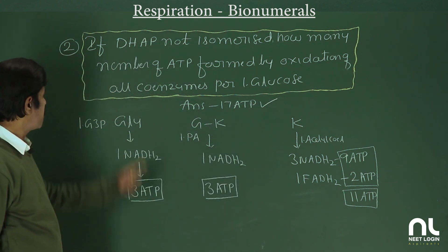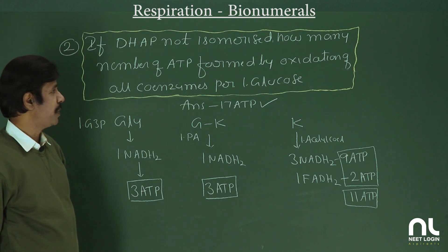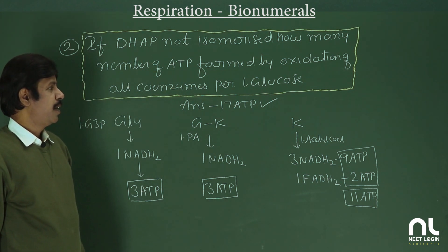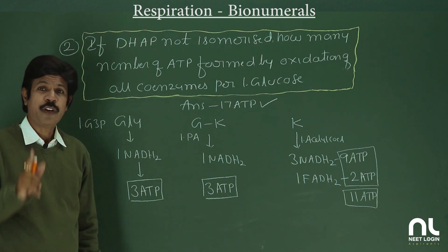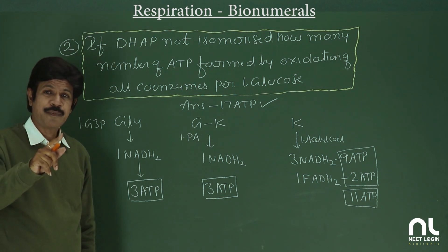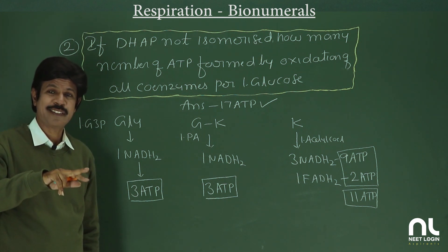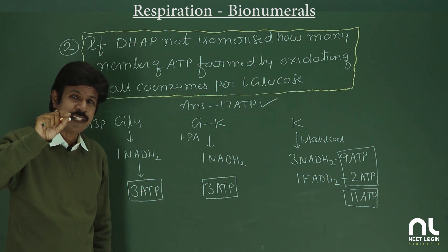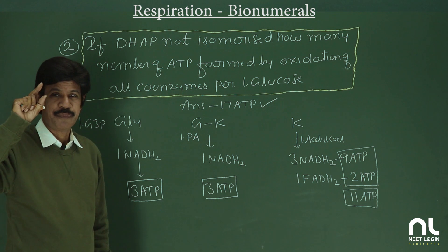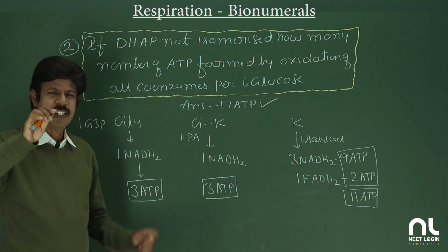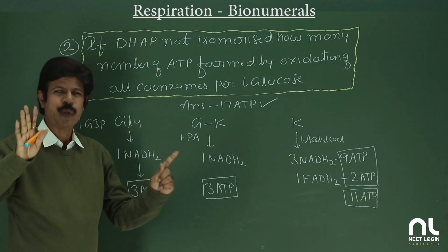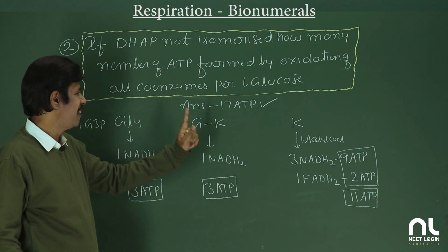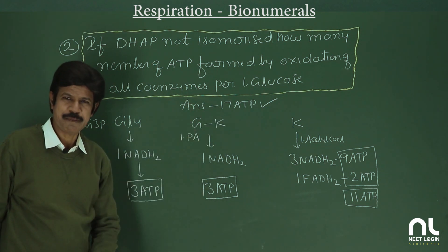If the question asks for total ATP when DHAP is not isomerized — including substrate level phosphorylation — you add 2 ATP from glycolysis and 1 ATP from Krebs cycle, giving 17 + 3 = 20 ATP. Oxidation of 1 G3P yields 20 ATP total; if considering only co-enzymes, it is 17 ATP.